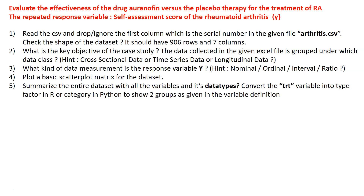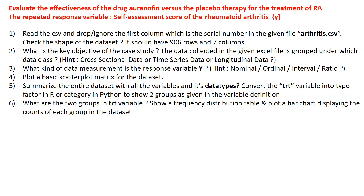Next, summarize the entire dataset with all variables and their data types, then convert the TRT variable into a factor in R or a category in Python to display the two groups — placebo and drug. Show a frequency table and a bar chart displaying the count of each group. I also recommend plotting both groups' histograms on one chart with some transparency (set an alpha value) so you can visually compare the two groups.